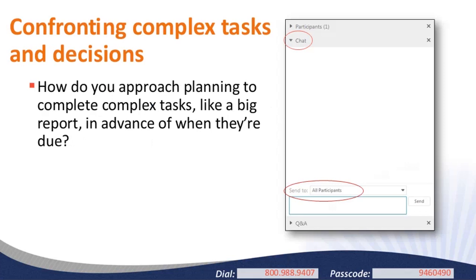Every one of us confronts complex tasks and decisions at some time or another. I'd like you to think for a moment about a complex task you've had to complete recently or have coming up in the near future—maybe a big report or a grant proposal. How do you approach planning to complete complex tasks like a big report in advance of when they're due? For example, I try to block out chunks of time in my calendar a few weeks before the deadline. Please share some of the strategies you use in the chat box, sending your response to all participants.